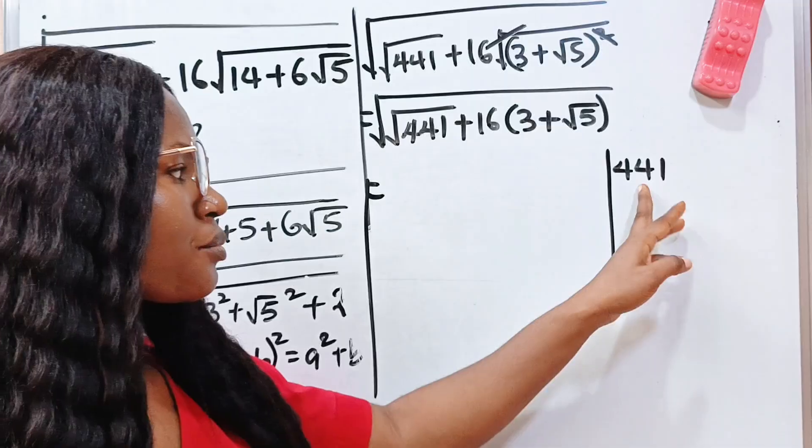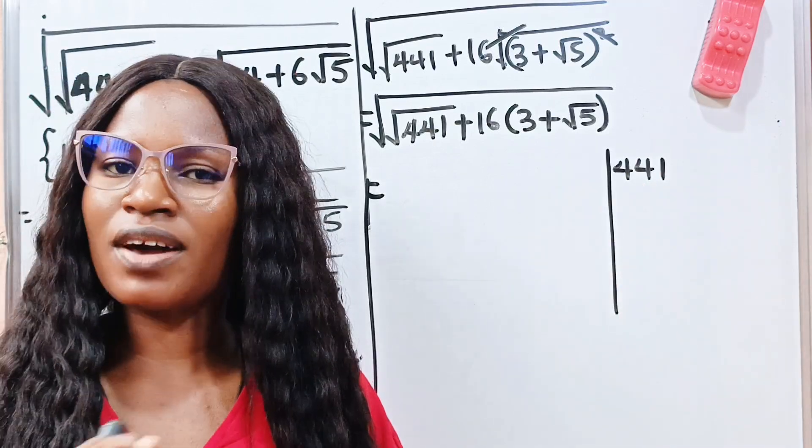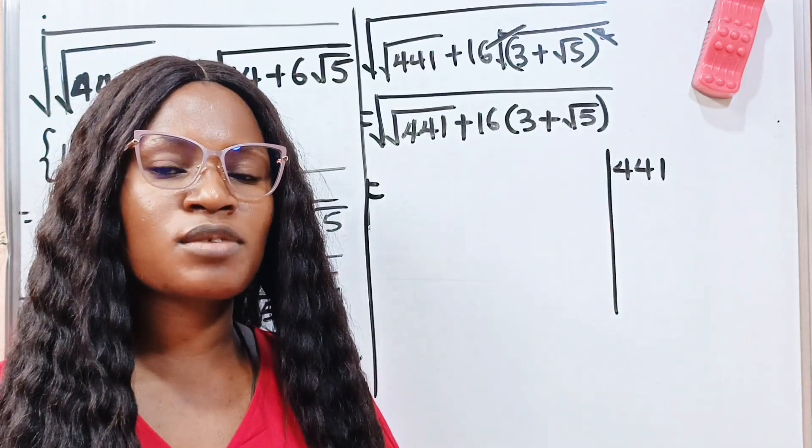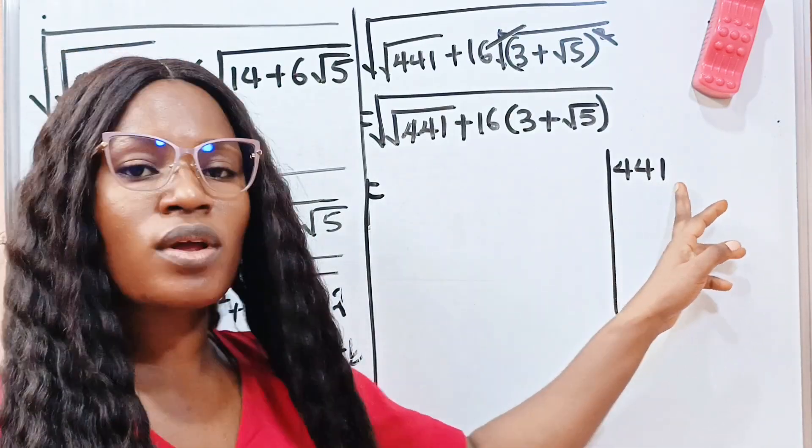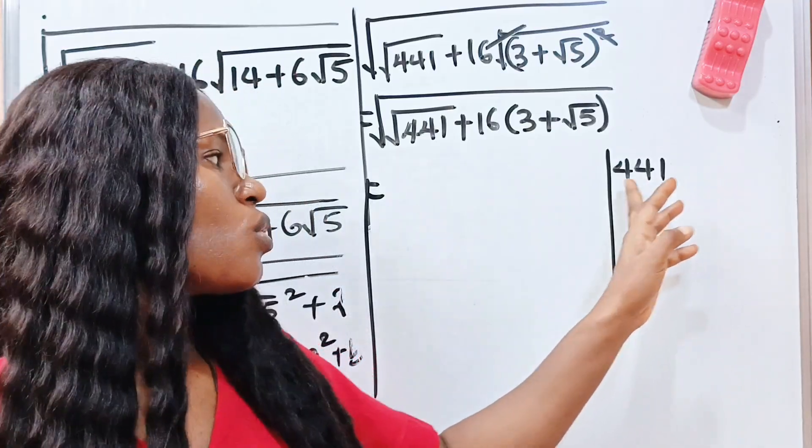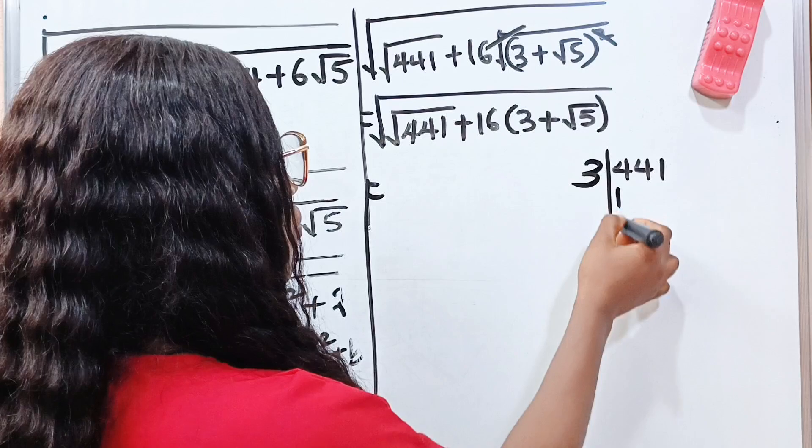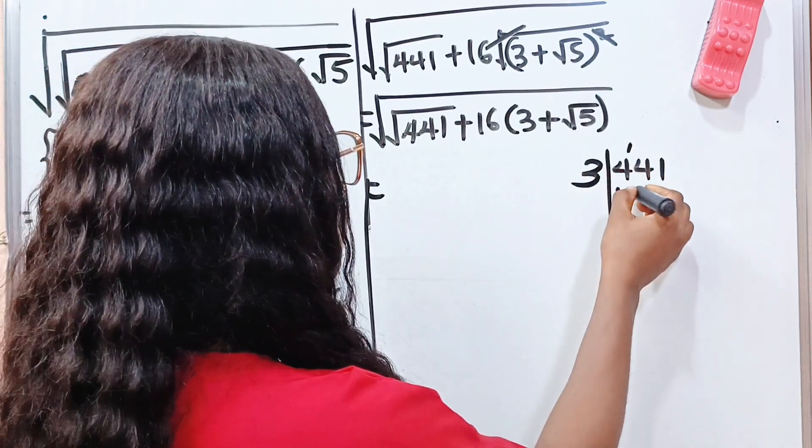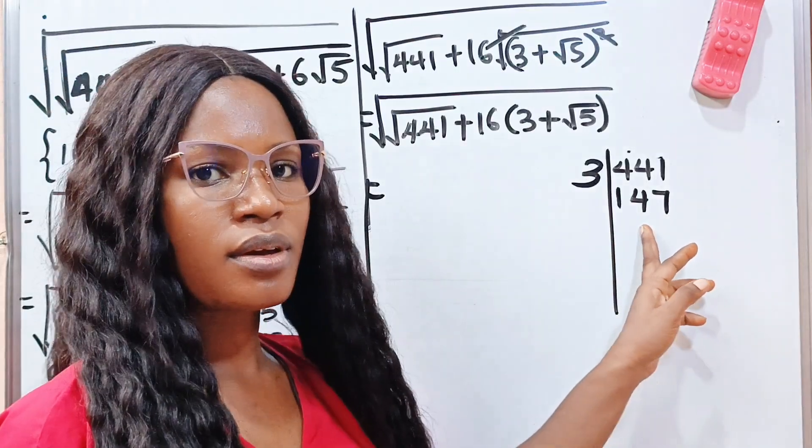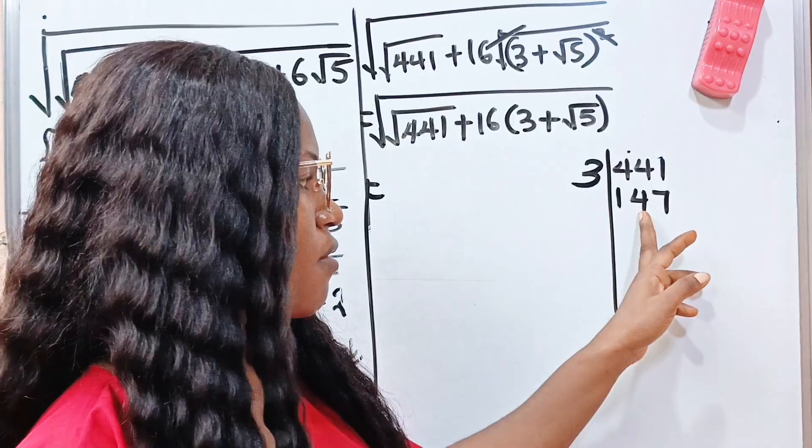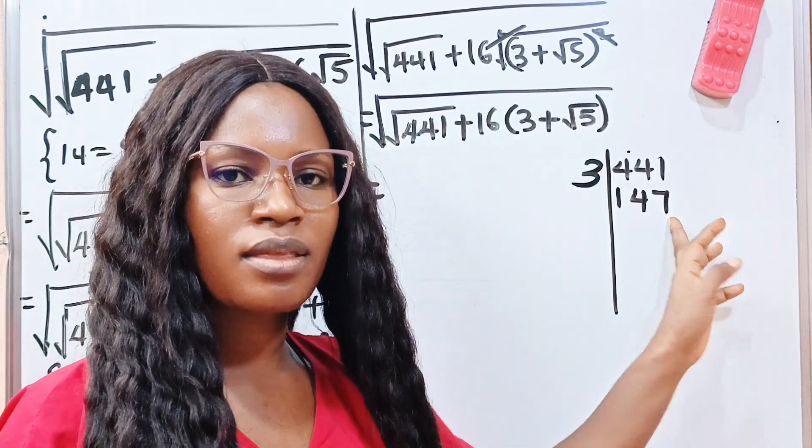So we have 441. The first thing we need to do is we check the smallest factor of 441, which is 3. Yes, 2 cannot divide this, it's not an even number. Now how do you know that 3 can divide a number? When you sum up the digits and the sum gives you a number divisible by 3, then definitely that number is divisible by 3. For example, 4 plus 4 is 8 and 8 plus 1 is 9. 9 is divisible by 3. So 441 must be divisible by 3. So we use 3. Now when 3 divides 4, we have 1, 1 remainder 1. 14 divided by 3, we have 4, 4 remainder 2. 21 divided by 3, we have 7. Now let's check again if this is divisible by 3. If you check it, you will see 1 plus 4 is 5 and 5 plus 7 is 12. So 12 is divisible by 3. So definitely this number is divisible by 3. So we go with 3 again. 14 divided by 3 will give us 4, 4 remainder 2. 27 divided by 3 will give us 9.